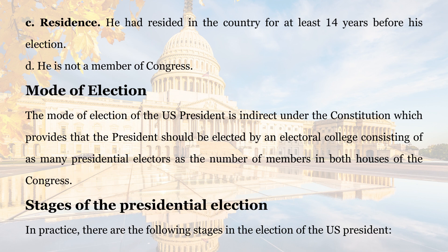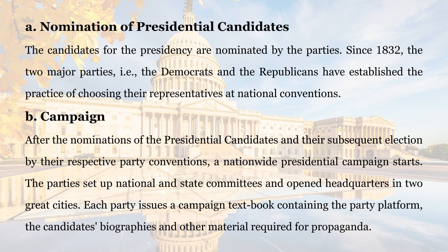Stages of the Presidential Election. In practice, there are the following stages in the election of the U.S. president. A. Nomination of Presidential Candidates. The candidates for the presidency are nominated by the parties. Since 1832, the two major parties — the Democrats and the Republicans — have established the practice of choosing their representatives at national conventions.